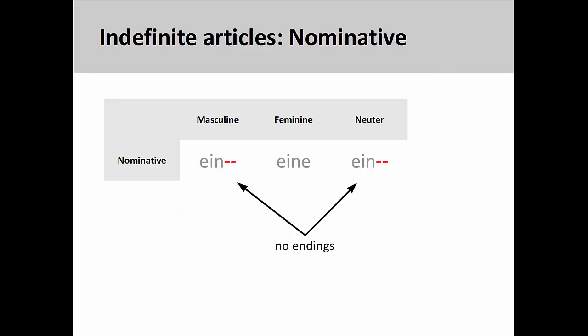In English, an indefinite article — either 'a' or 'an' — is used when we are talking about a thing in general, not a specific thing. For example, 'a tree' instead of 'the tree.'